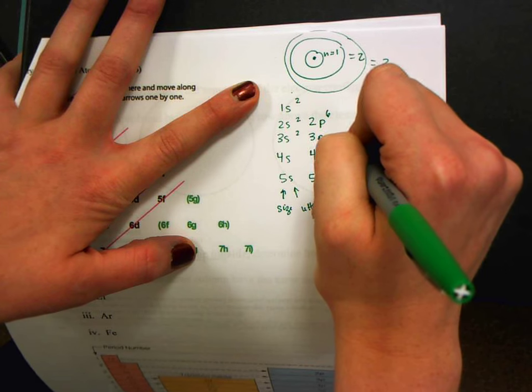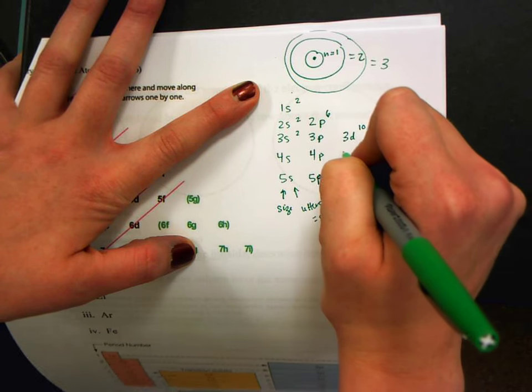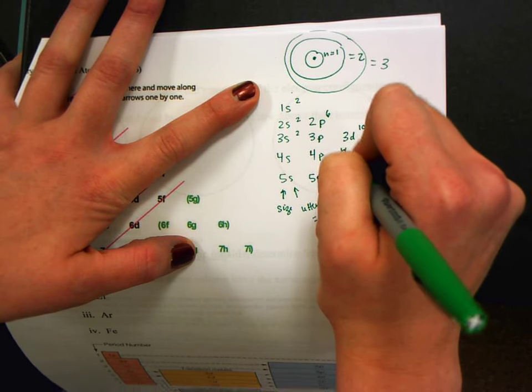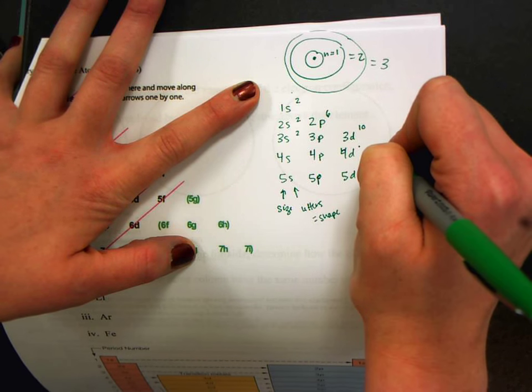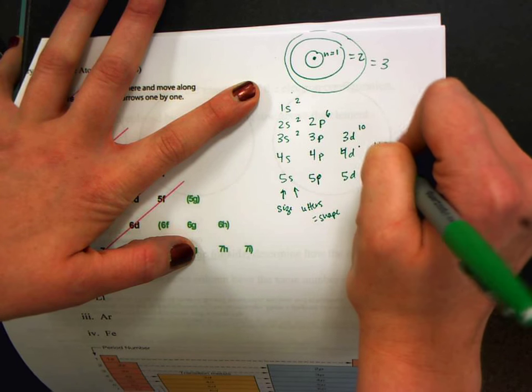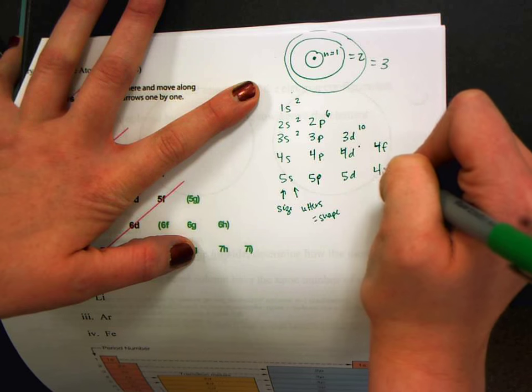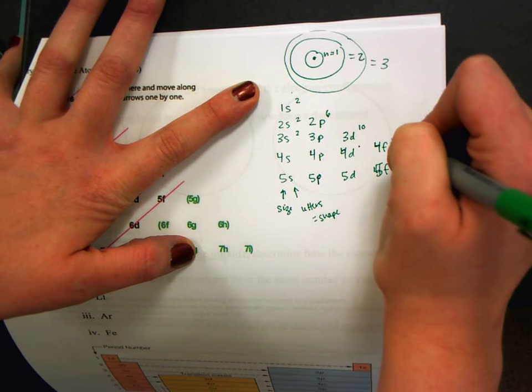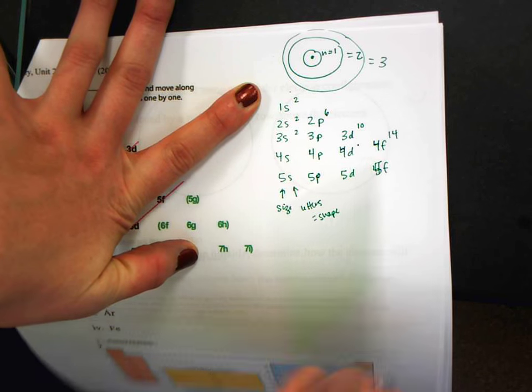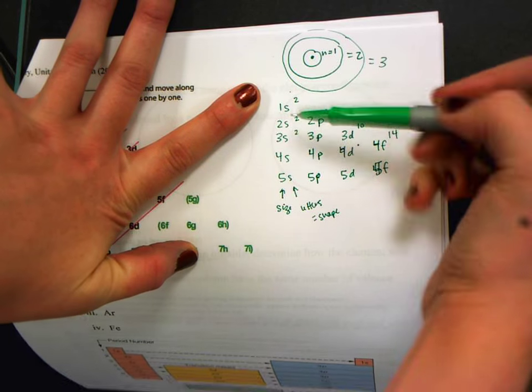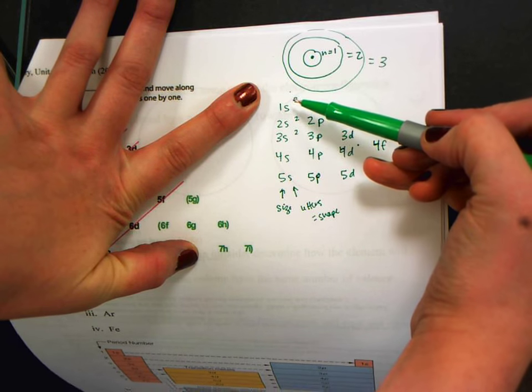The next type of orbital is d. d can hold 10. And the final one, which we probably won't even work with, is f, 5f, which can hold 14. So notice that each of these goes up by 4. There's a difference of 4 between them. I start with the shape of s. It can hold two electrons. And then 6, 10, and 14.